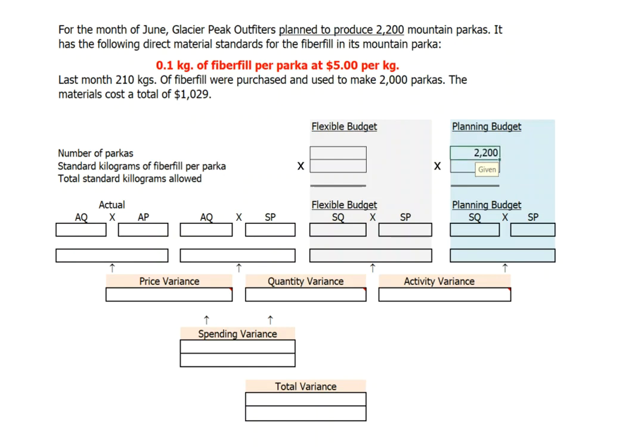So when it puts together its planning budget, we would use 2,200 for our level of expected sales. It has the following direct material standards for fiberfill in its mountain parka: one-tenth of a kilogram of fiberfill per parka at $5 per kilogram. Last month, 210 kilograms of fiberfill were purchased to make 2,000 parkas. So our actual level of production of 2,000 parkas is what we will use to calculate or prepare our flexible budget.